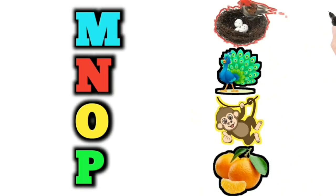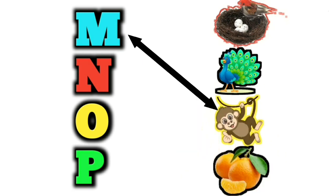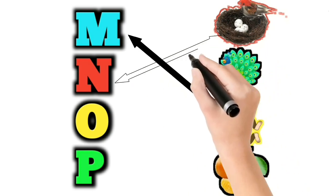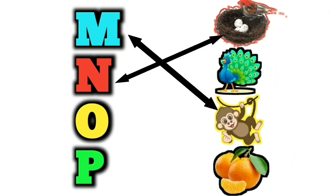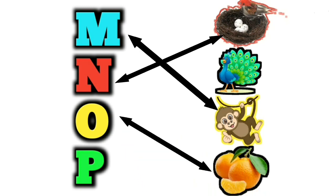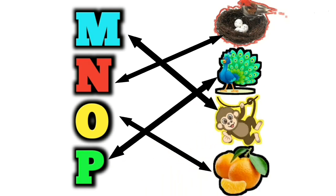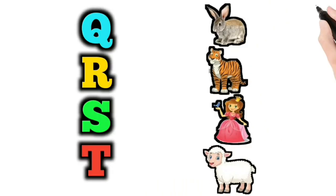Y for Monkey. Y for Nest. O for Orange. B for Peacock. Y for Bob. U for Queen.